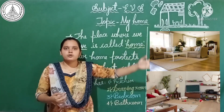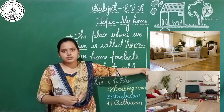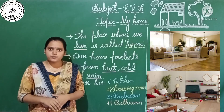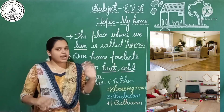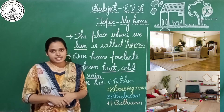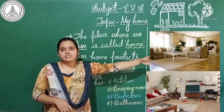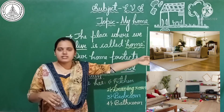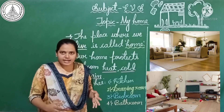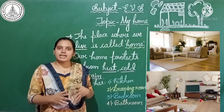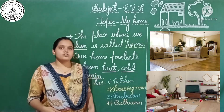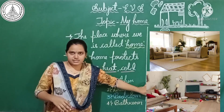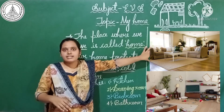Dear children, see these two rooms. Observe both pictures — which is the tidy room, that is the clean room, and which is the untidy room? Very good. This is the clean, tidy room and this is the untidy room. Here the things are properly placed; in the other the things are not properly placed and the room is not clean. You have to keep your room neat and tidy like the clean one.